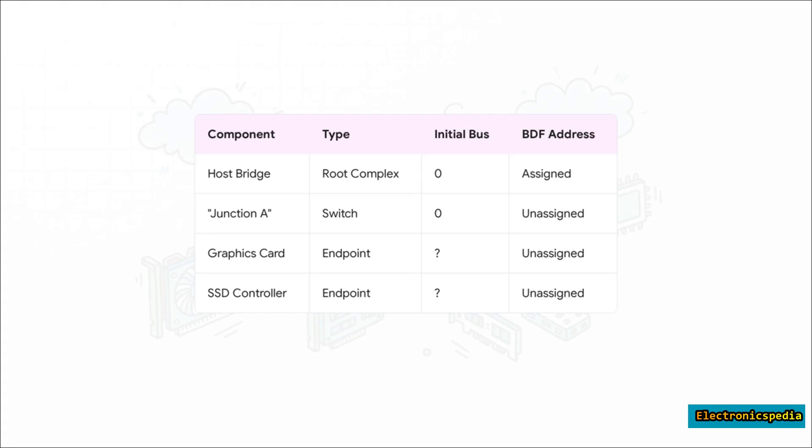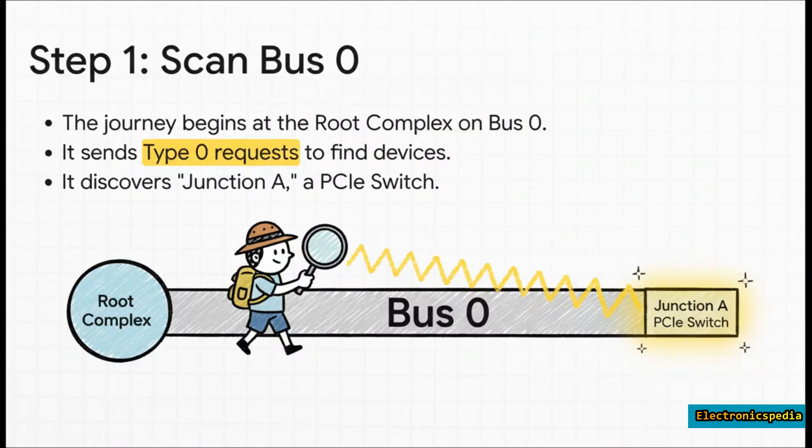And the journey begins. The enumeration software kicks things off by scanning Bus 0. It starts sending out those Type 0 requests, the 'Who are you?' question, to every possible slot on this bus.